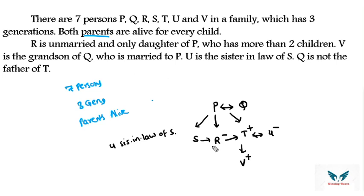Since R is the only daughter, any other children of P and Q are sons, so S and T are male. S, R, and T are children of P and Q. T and U are a married couple, and their son is V. Since Q is not the father of T, Q is the mother and P is the father of T.